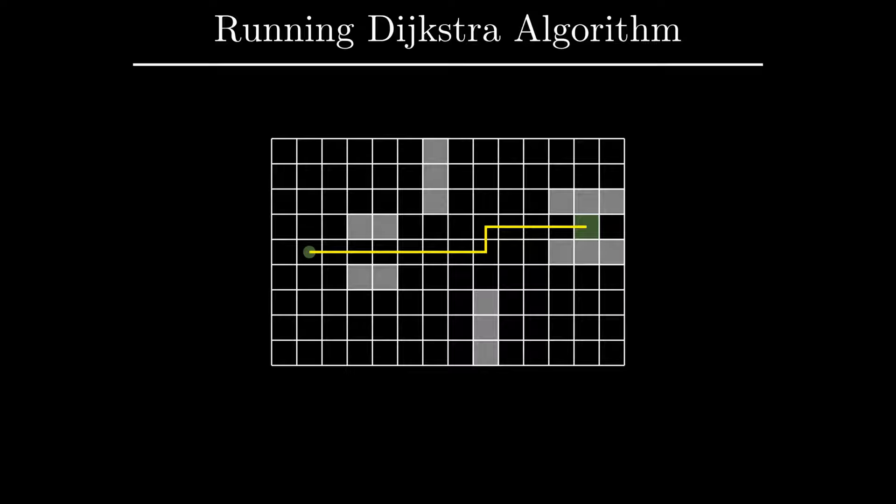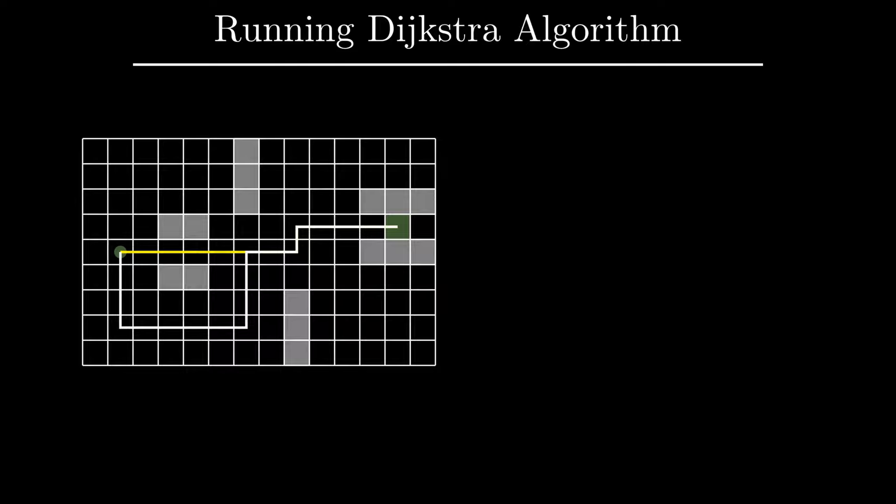Both of these paths come equally close to the obstacles, but the optimal one is shorter. Indeed, the length of the path found by Dijkstra algorithm is 18, while an optimal one has length 12.